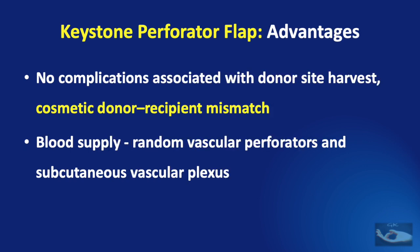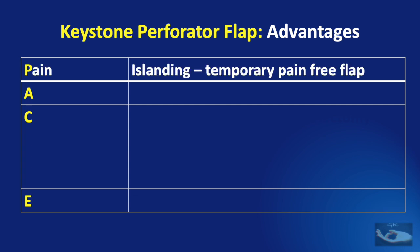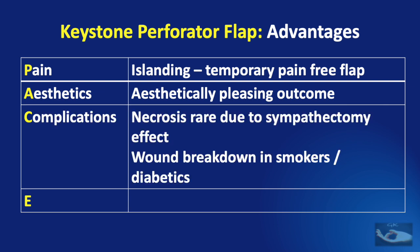The advantages of the Keystone Perforator Flap are that there are no complications associated with donor site harvest and cosmetic donor-recipient mismatch is avoided. The blood supply is from random vascular perforators and the subcutaneous plexus of vessels, providing a dual blood supply. Felix Behan calls it the PACE concept. Because of islanding, the flap is a temporary pain-free flap that gives an aesthetically pleasing outcome. Complications are very few — necrosis is rare due to the sympathectomy effect, causing vessel dilation and increased blood flow. Wound breakdown occurs only in smokers and diabetics, and the flap is economical because it saves time.